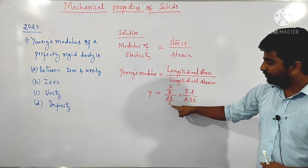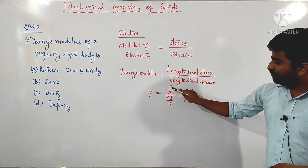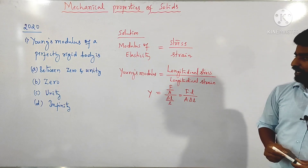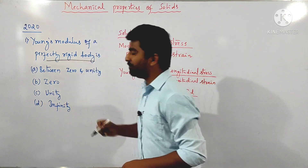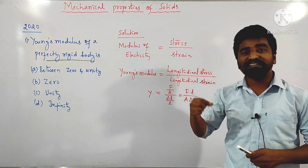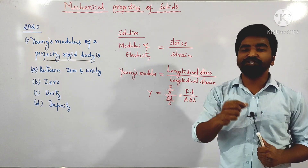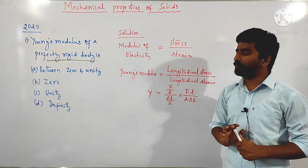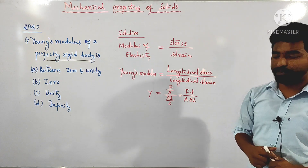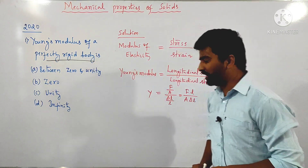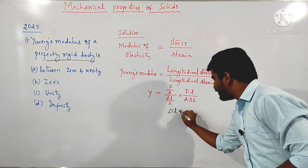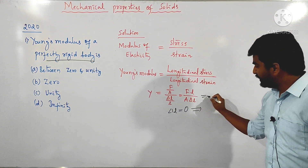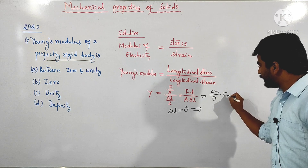Longitudinal strain is change in length to the original length. Now, read the question carefully — it says perfectly rigid body. A rigid body is nothing but a body which does not change its shape and size when external force is applied. For a perfectly rigid body, there is no change in shape and size when external force is applied. So, the change in length of the body is equal to zero.